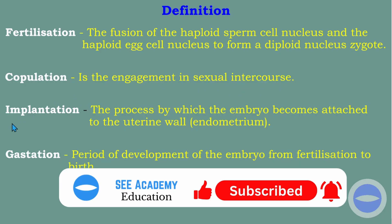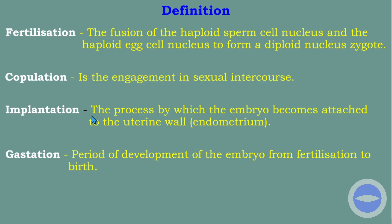Implantation is the process by which an embryo becomes attached to the uterine wall, or the endometrium. Gestation is the period of development of the embryo from fertilization to birth — gestation is just a fancy word for pregnancy.